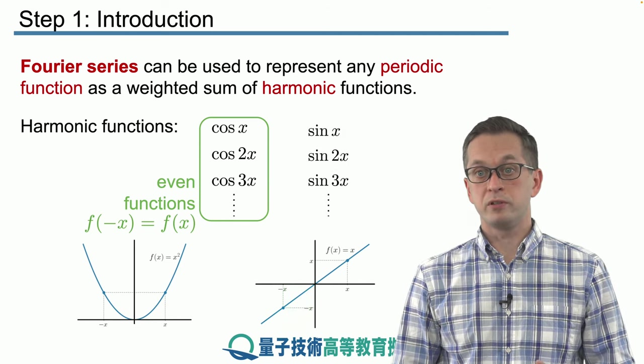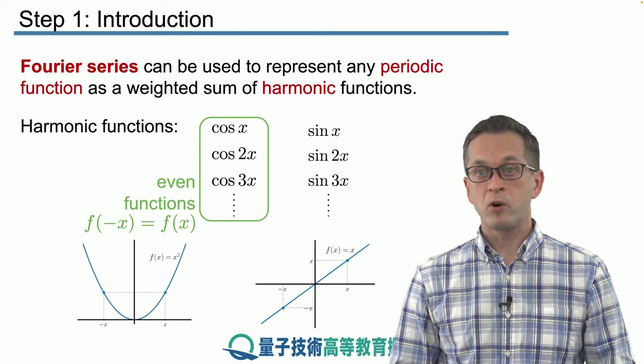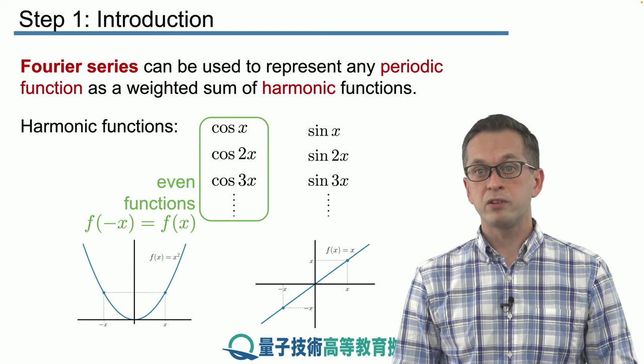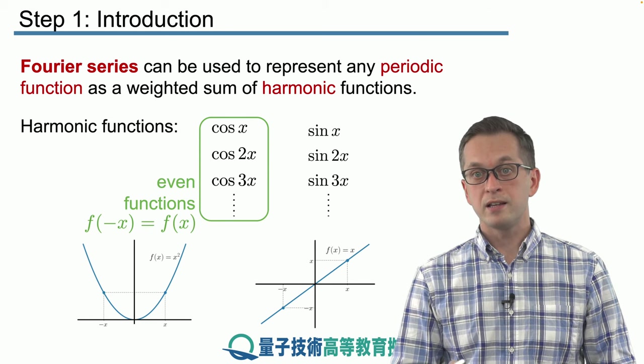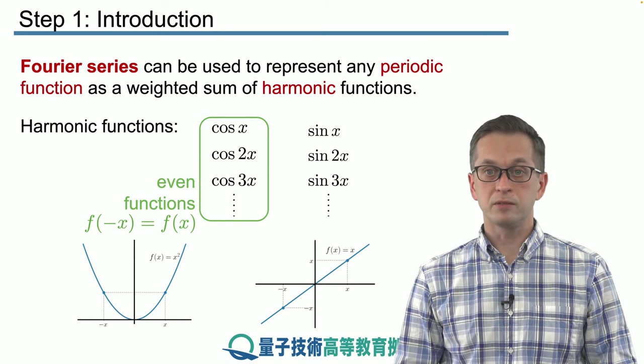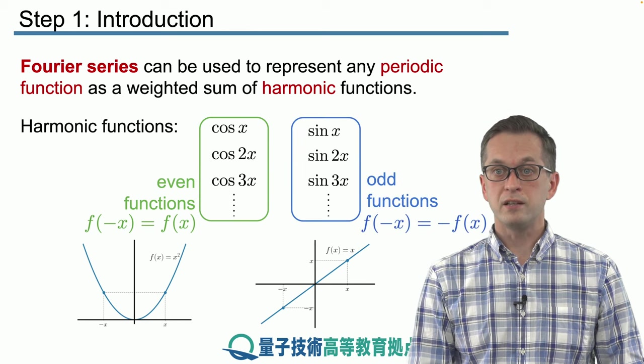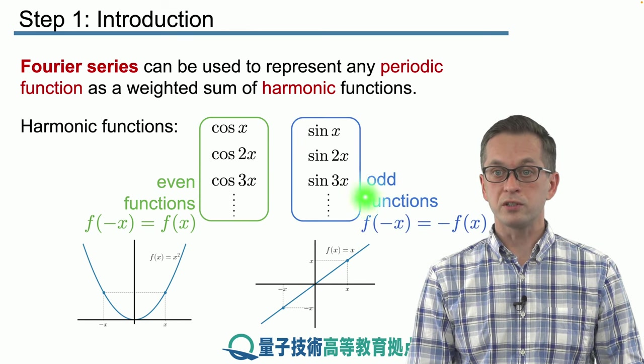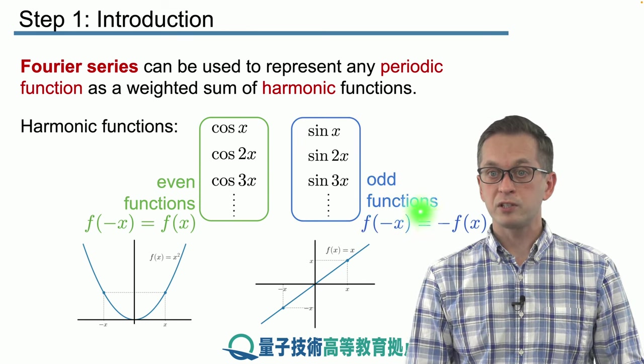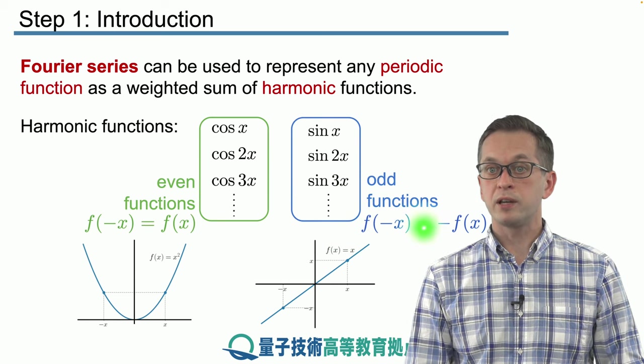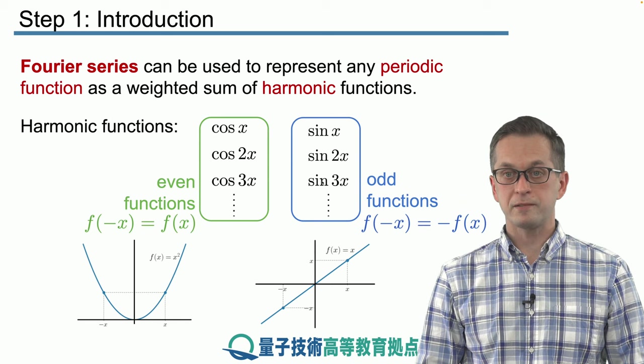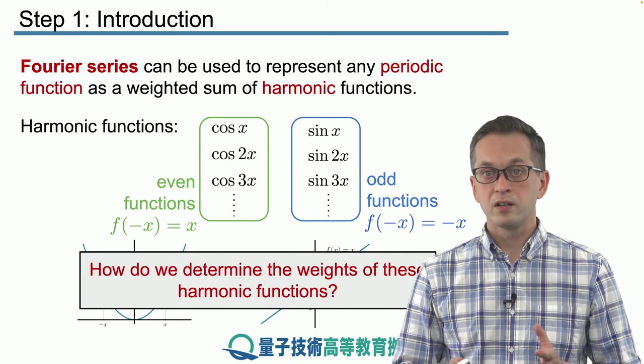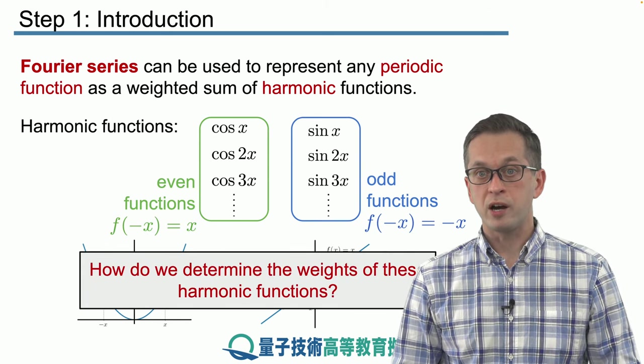So in order to represent odd functions, we need some odd harmonics as well. And these are given by sines. We will have sin x, sin 2x, sin 3x, and so on. So here, this is the definition of the odd function. If I look at the function at position minus x, I'm going to get minus the value of the function at position plus x.